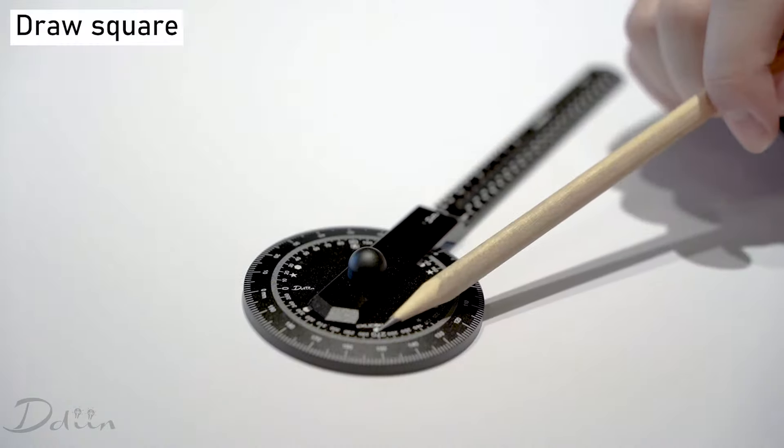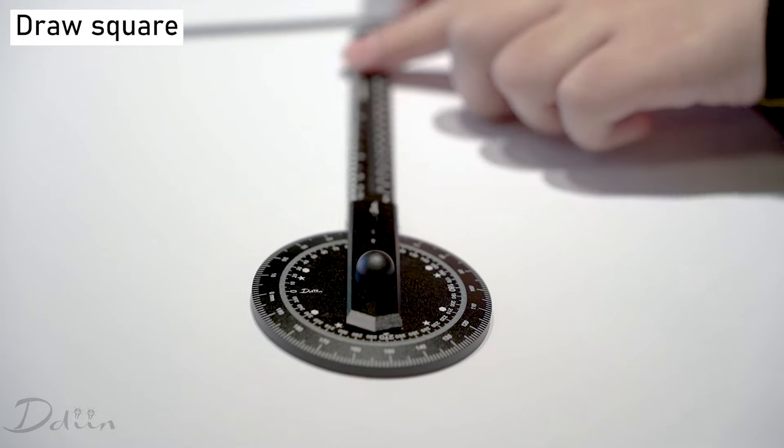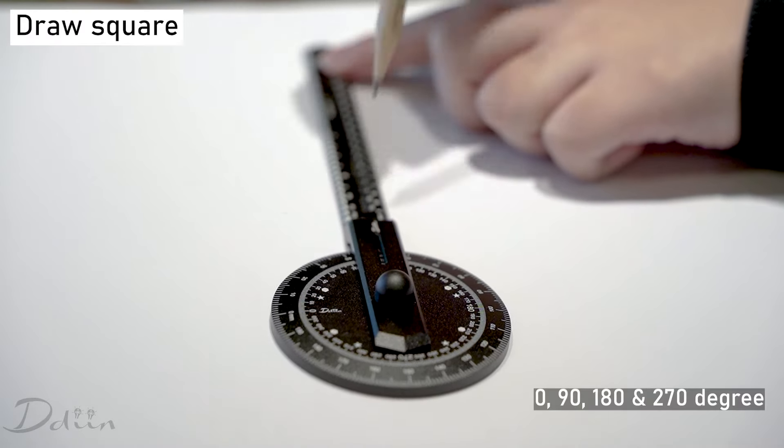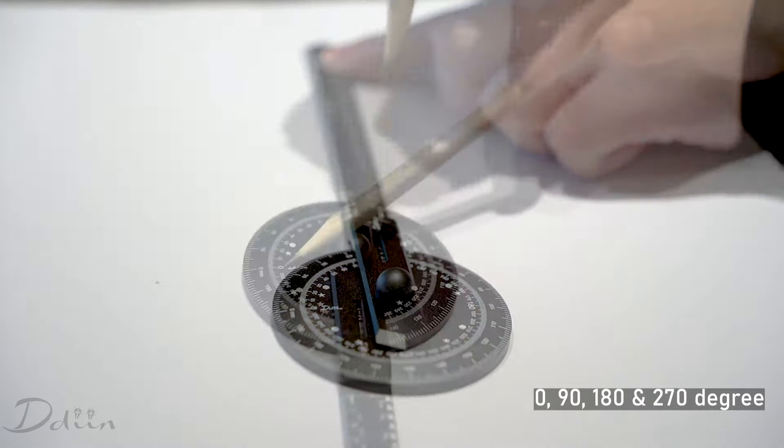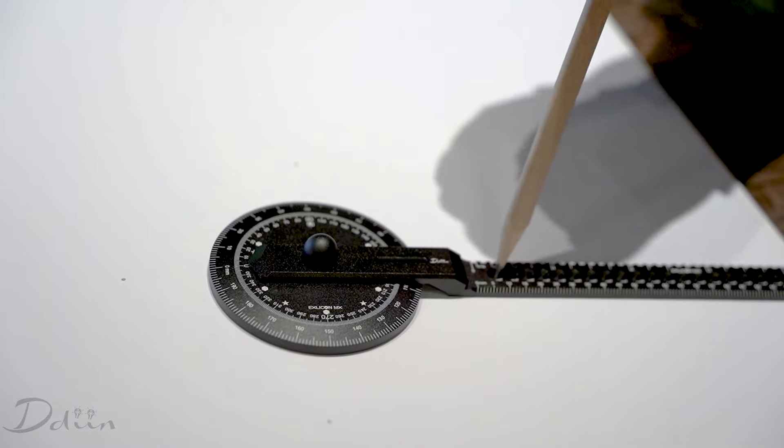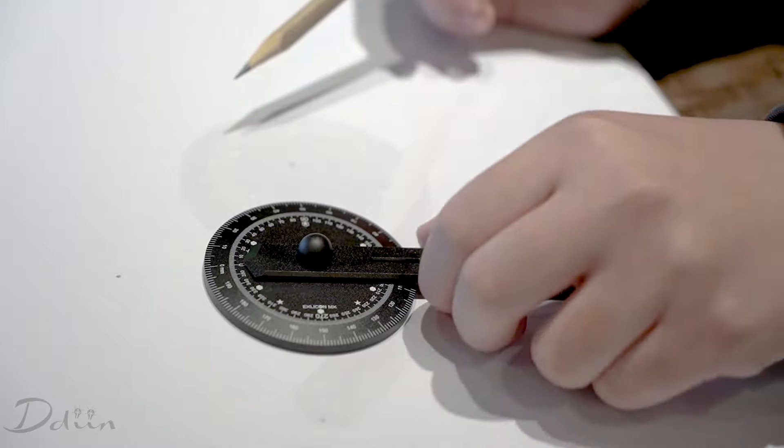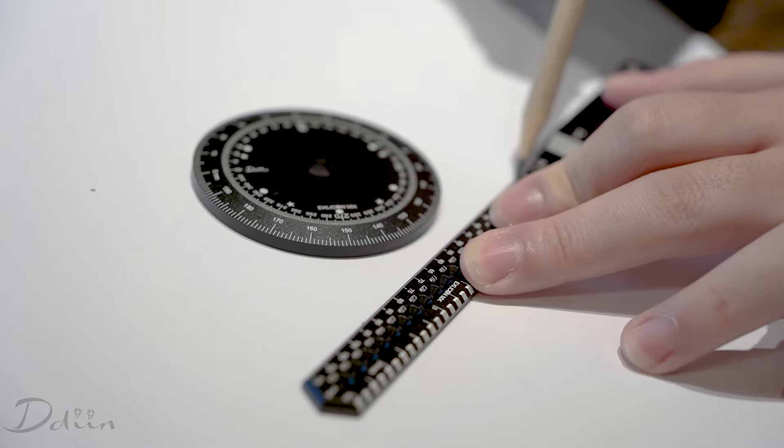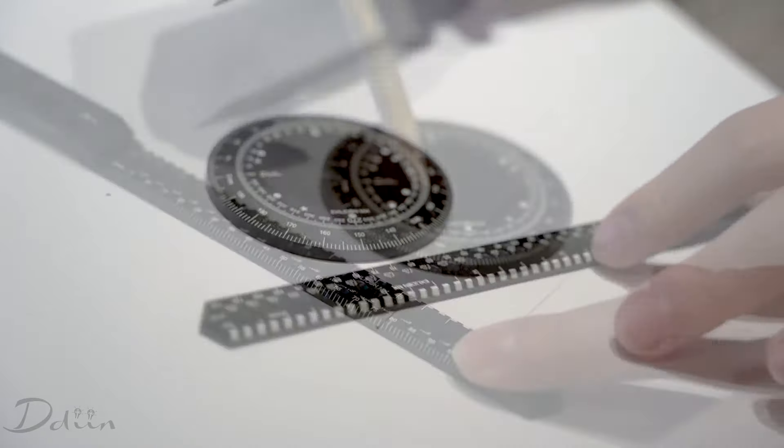To draw a square, align the pointed tip of the wing at zero, ninety, one-eighty, and two-seventy degrees. Draw a dot at each measurement. Remove the base and wing and connect the dots to form a square.